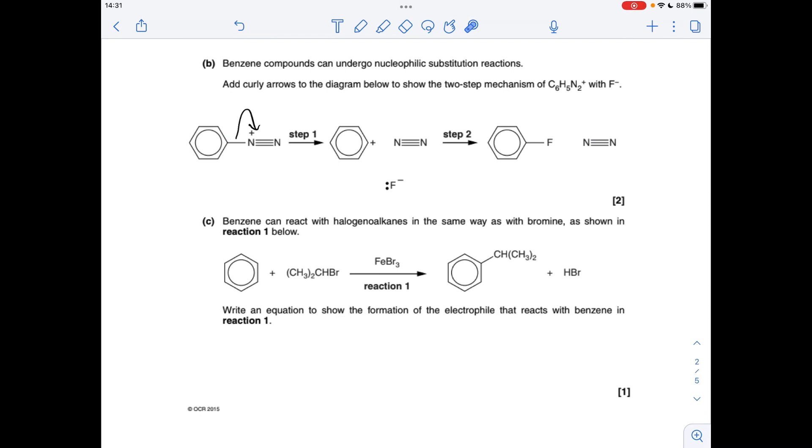And then step two, we need to go from this to this. Obviously we've formed a covalent bond between the fluorine and the carbon. So how's that happened? A pair of electrons from the F minus ion go to that positive carbon and form that covalent bond.